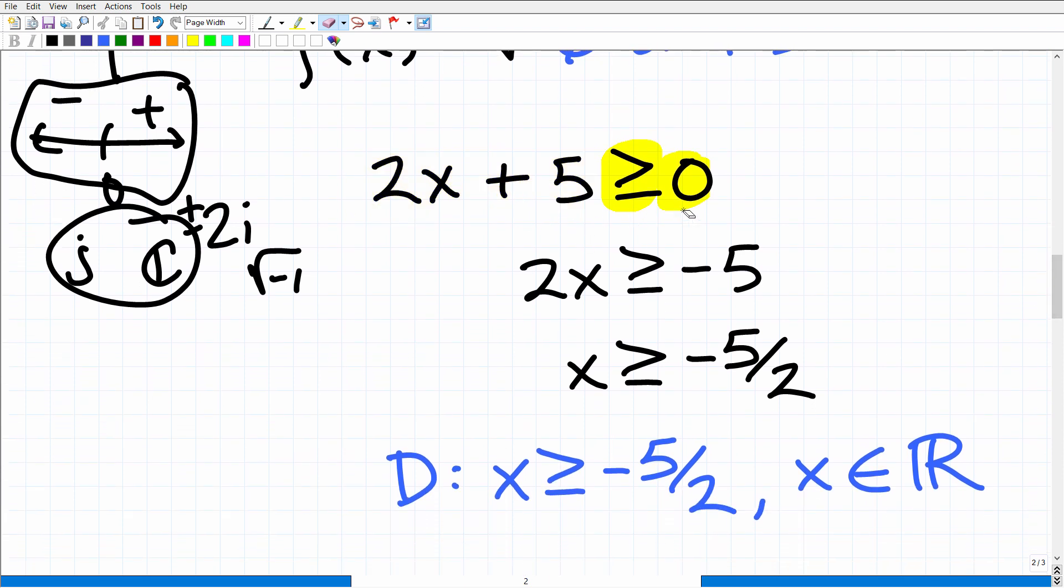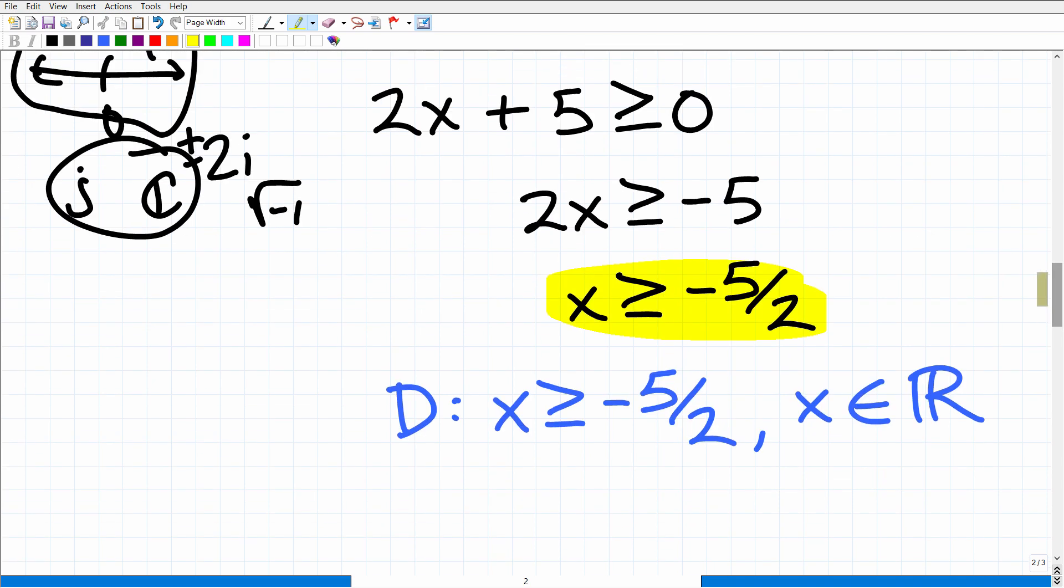Now, just to solve this inequality, all I have to do is subtract 5 from both sides of the inequality. You get 2x is greater than or equal to negative 5, and then divide both sides of the inequality by 2, and you end up with this. So, x is greater than or equal to negative 5 halves.